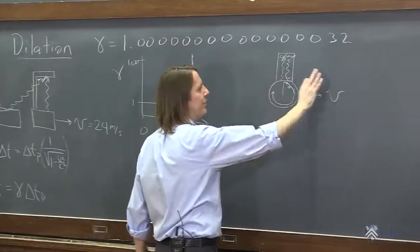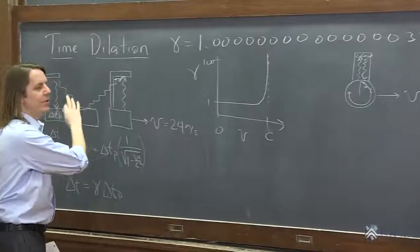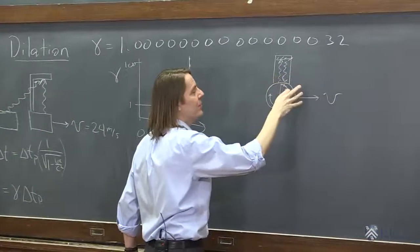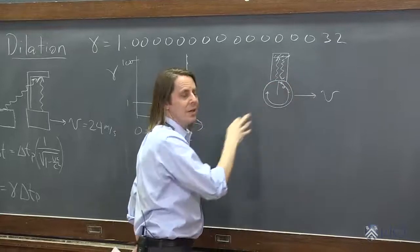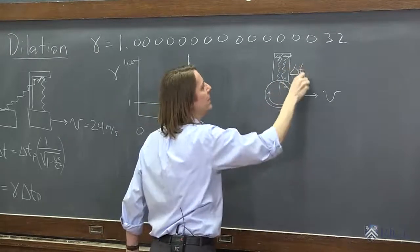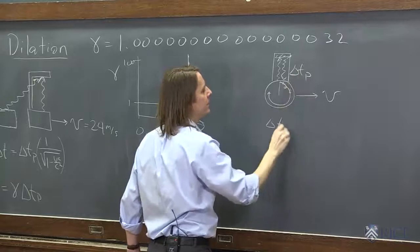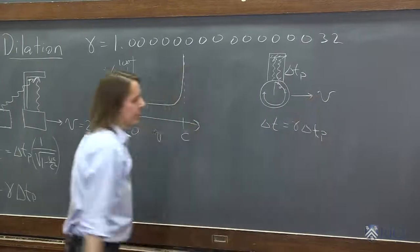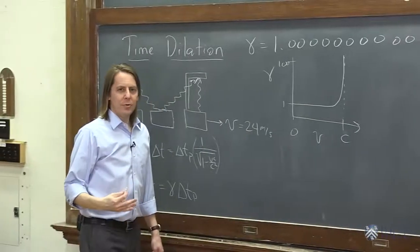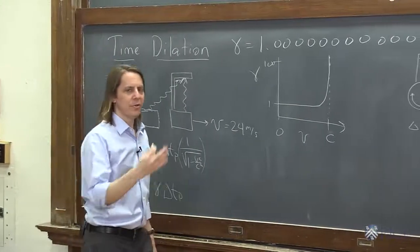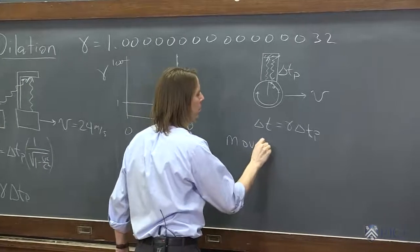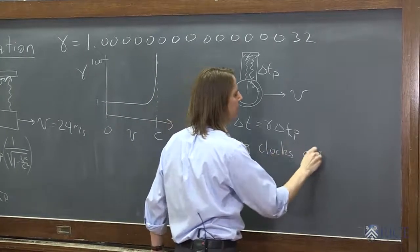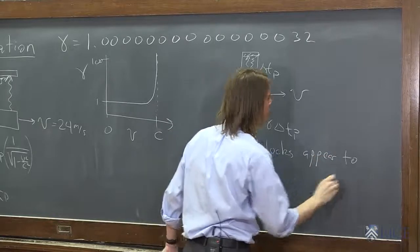Well, if you see this clock moving, it's exactly what we talked about here. When some interval of time occurs to the clock delta Tp, you see one that's longer delta T. Delta T equals gamma delta Tp. So what it looks like to you is that the clock appears to go slower. Moving clocks appear to run slower.